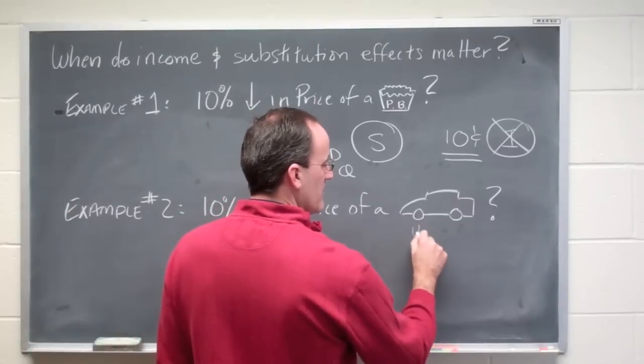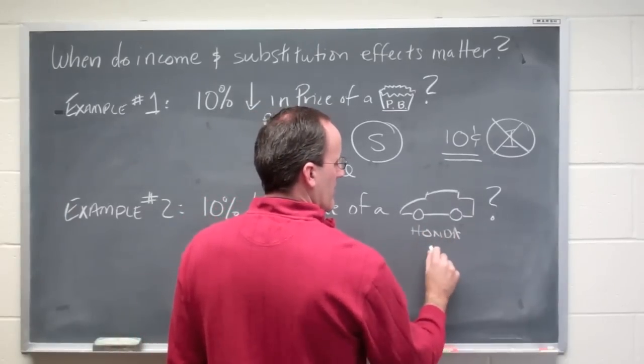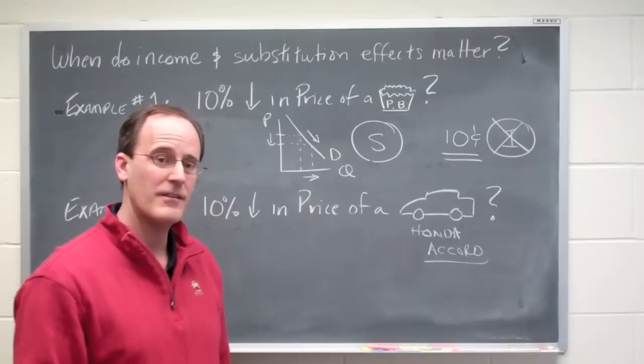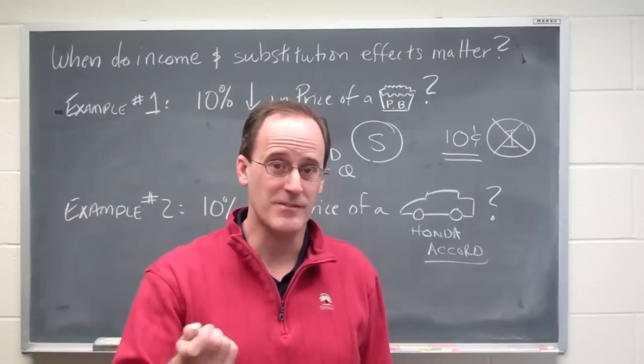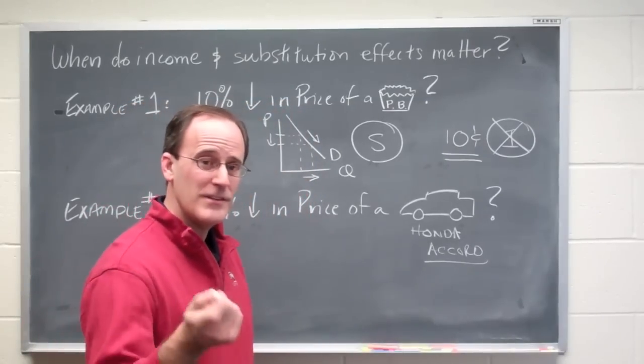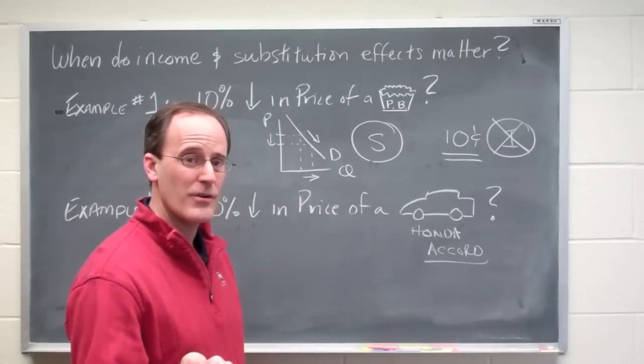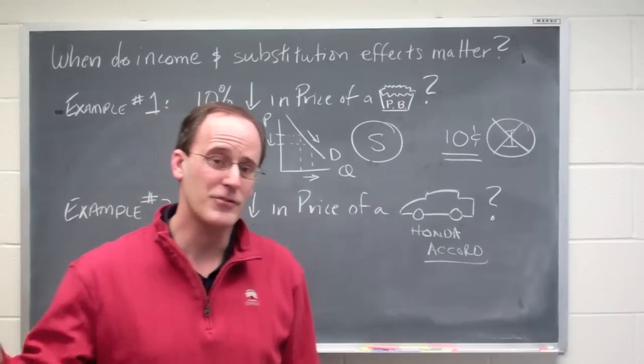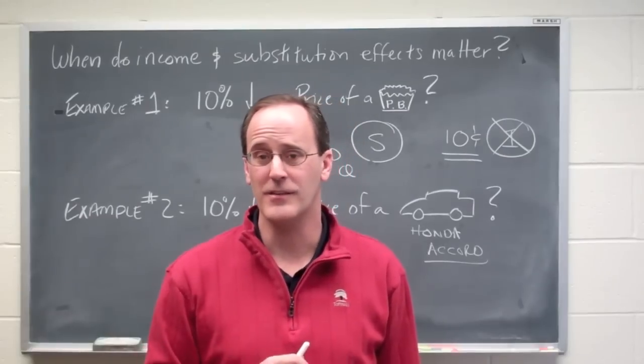So if this ends up being a Honda Accord, which nicely equipped is $30,000, you can save 10% on a Honda Accord. Well, that amounts to $3,000. Now, if we hold your income constant and you've just saved $3,000, the question is, is that a lot of money?